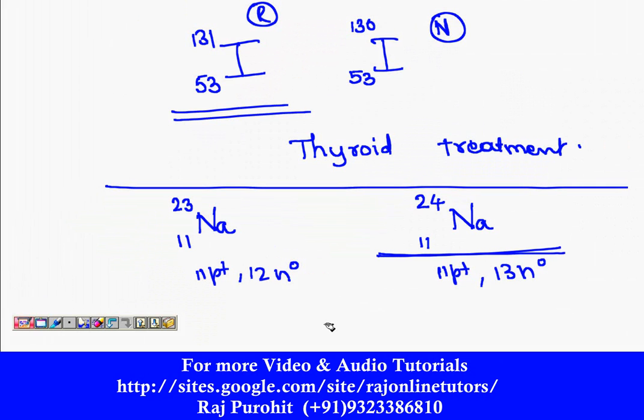So on this addition of this extra neutron, this also emits out some rays which are going to be the rays from radioisotope of sodium, that is sodium-24. This is used in treatment of blood, detection of blood disorders.